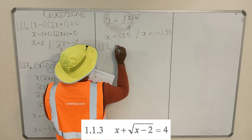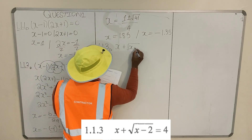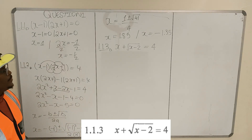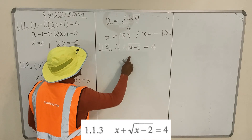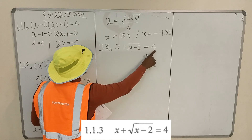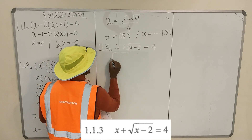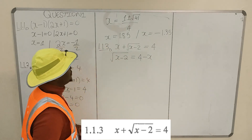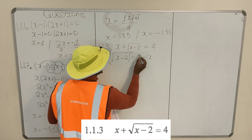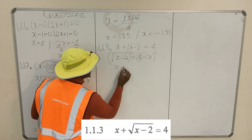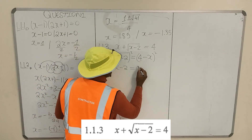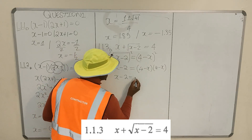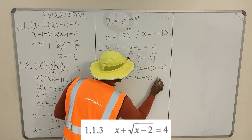1.1.3: we have x plus the square root of (x minus 2) equals 4. We need to isolate the square root, so we transpose x to the other side. We are left with the square root of (x minus 2) equals 4 minus x. Then we square both sides of the equation.